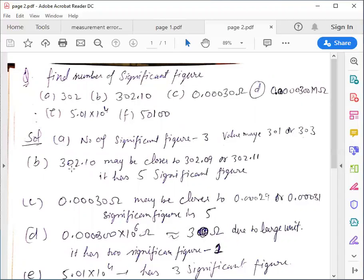In question B, we have 302.10 may be closer to 302.09 or 302.11. It has 5 significant figures and our result is correct up to 5 significant figures.